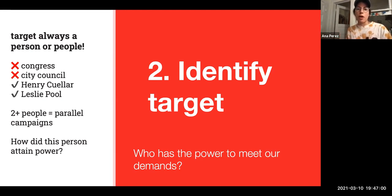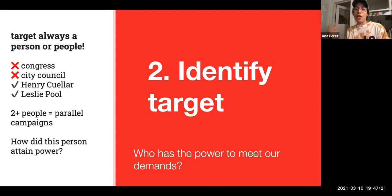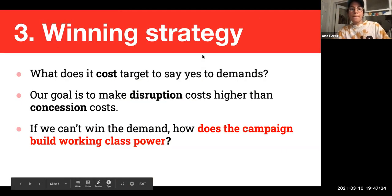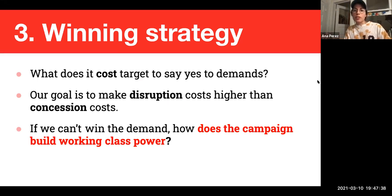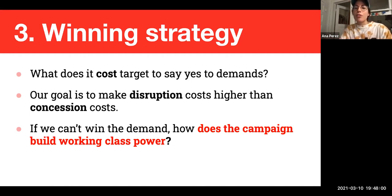Not all targets are going to be politicians — it could be someone appointed, like Spencer Cronk. You have to think about how to organize actions to get that person to move or remove them from power, and that looks different for an elected official versus someone appointed or a business owner who can control policy by threatening to withhold investments or not bring jobs to the city. When thinking about your winning strategy, ask what it costs the target to say yes, why haven't they already done it, and what disruption we can create so that the cost of saying no becomes greater than the cost of saying yes.